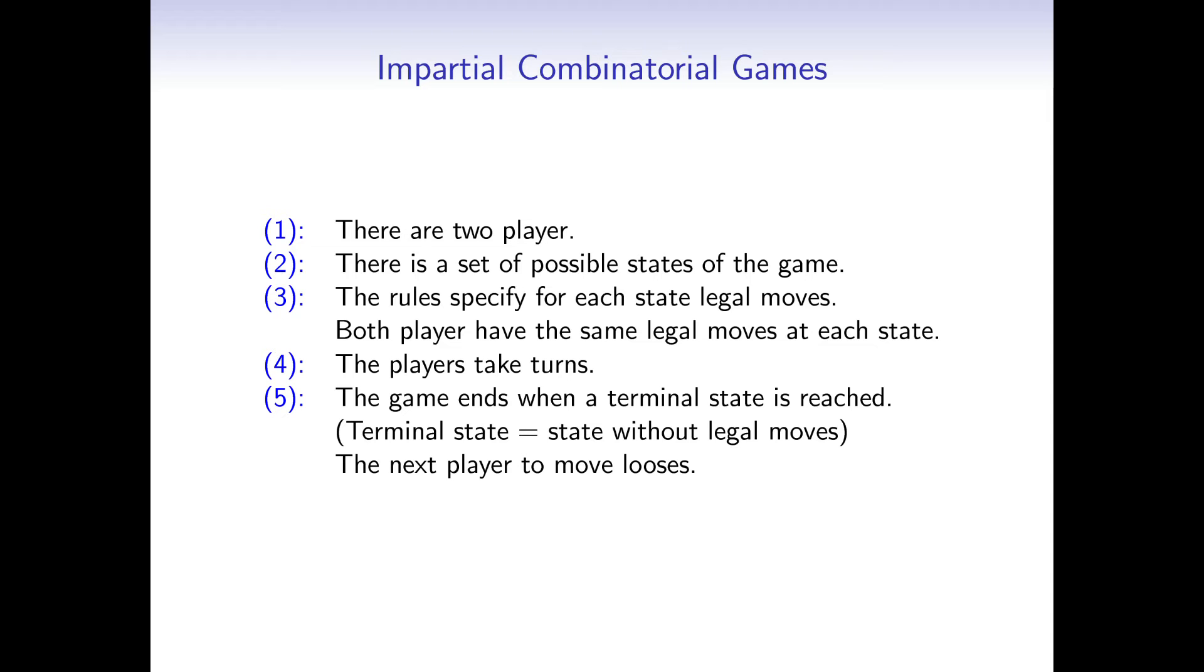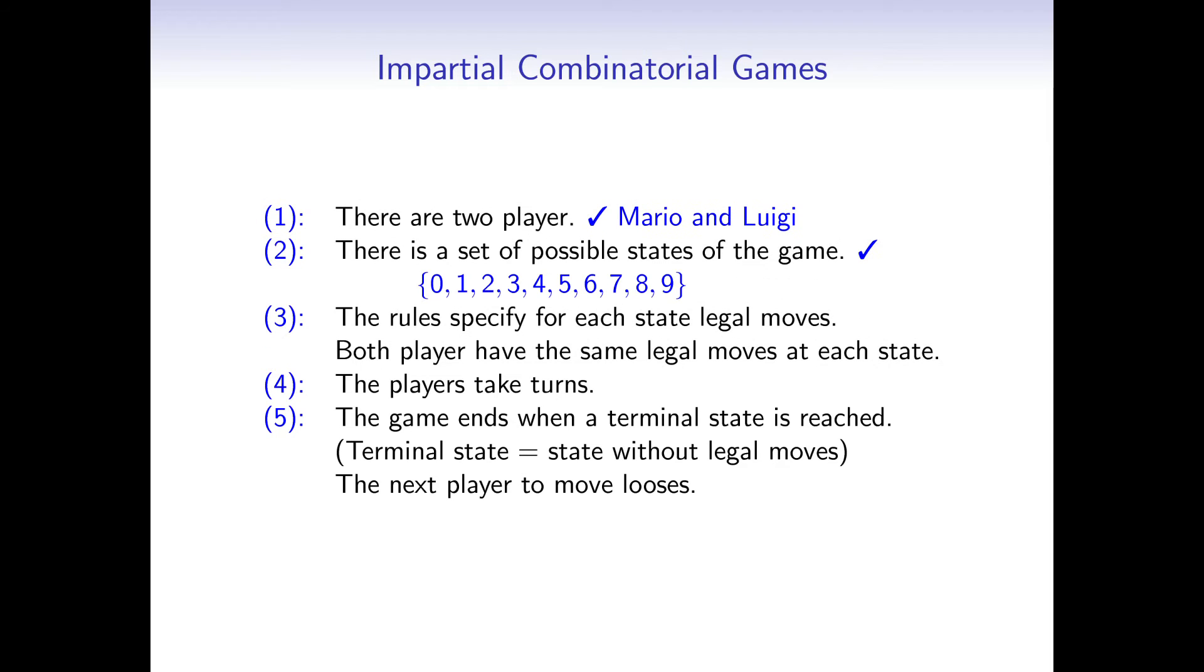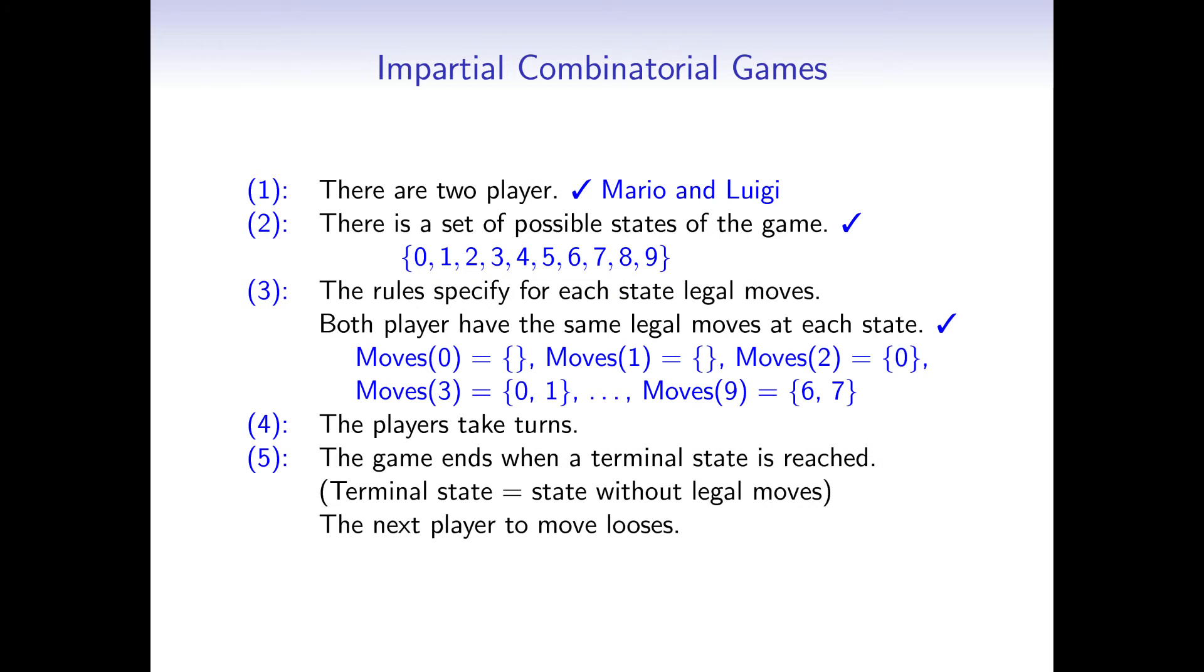Let's quickly check if Mario and Luigi's game is an impartial combinatorial game. We have 2 players, Mario and Luigi. We have 10 game states. The empty pile, the pile of height 1, the pile of height 2, and so on until the pile of height 9. We have defined the moves for each state.